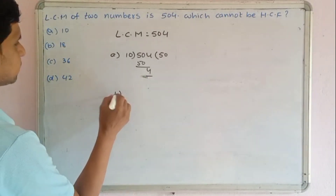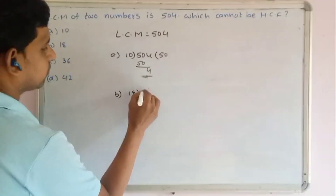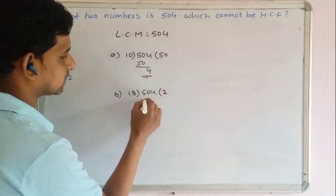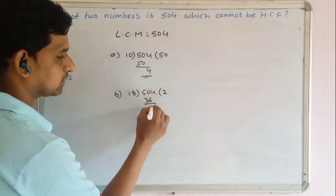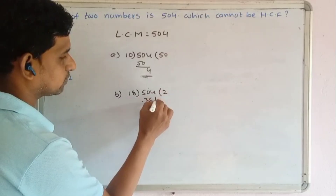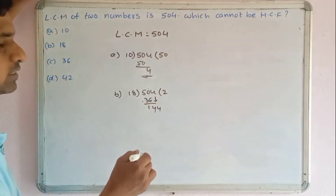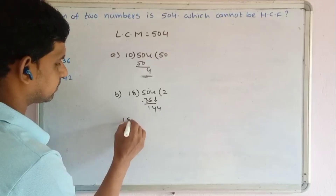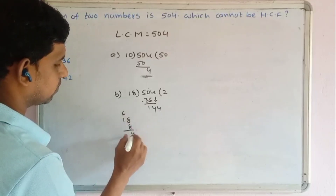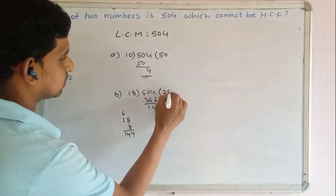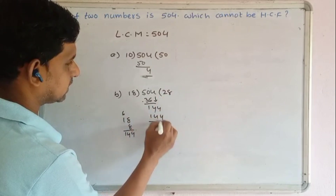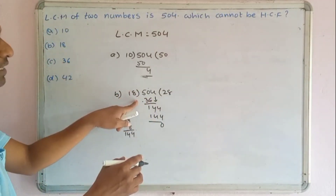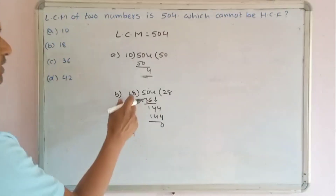Checking option B: 18. 504 divided by 18 gives 28 with remainder 0. So 18 divides 504 exactly — 18 may be a chance as HCF.